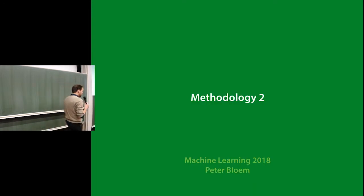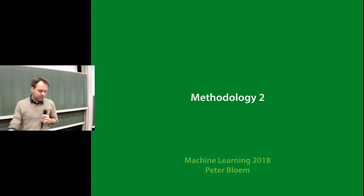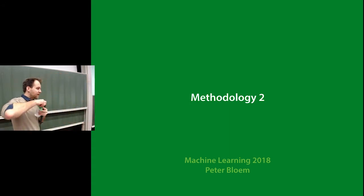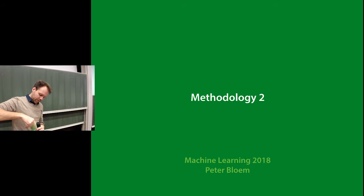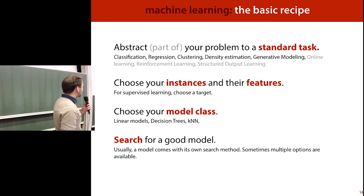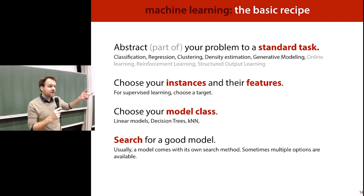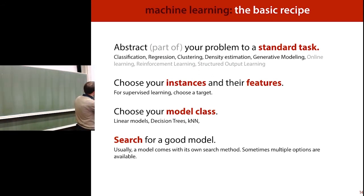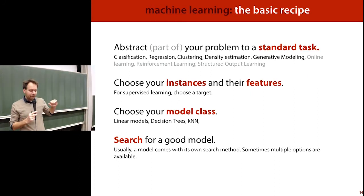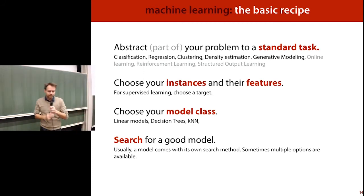That's the leftovers. On to the second lecture of this week. Like I said on Monday, we're going to talk about what happens outside the basic machine learning recipe. We assume we've picked a model and a way to search for it. Today we're going to talk about what happens before — specifically how you choose your instances, how you choose your features, and how you prepare and clean your data.